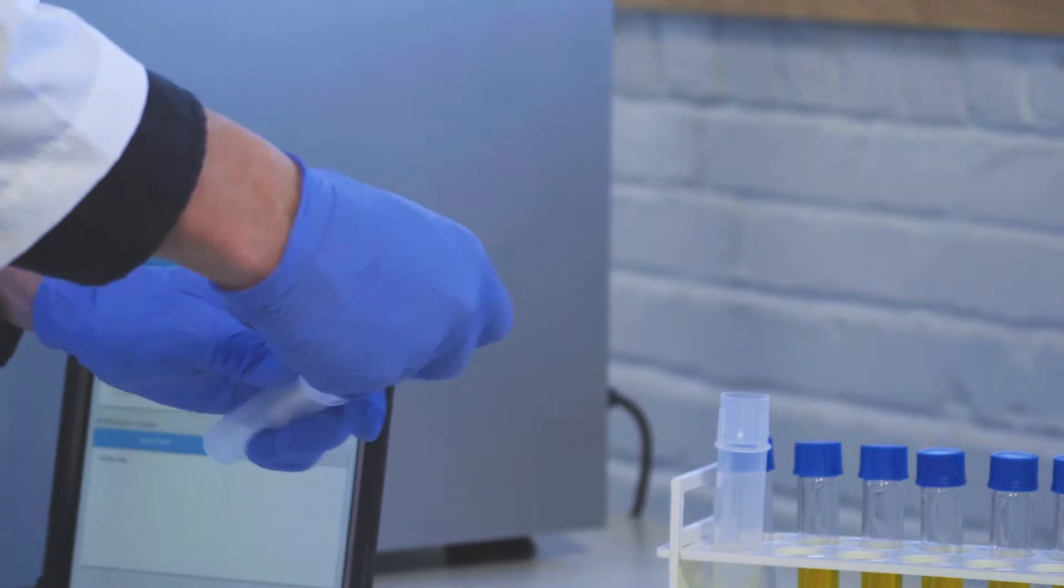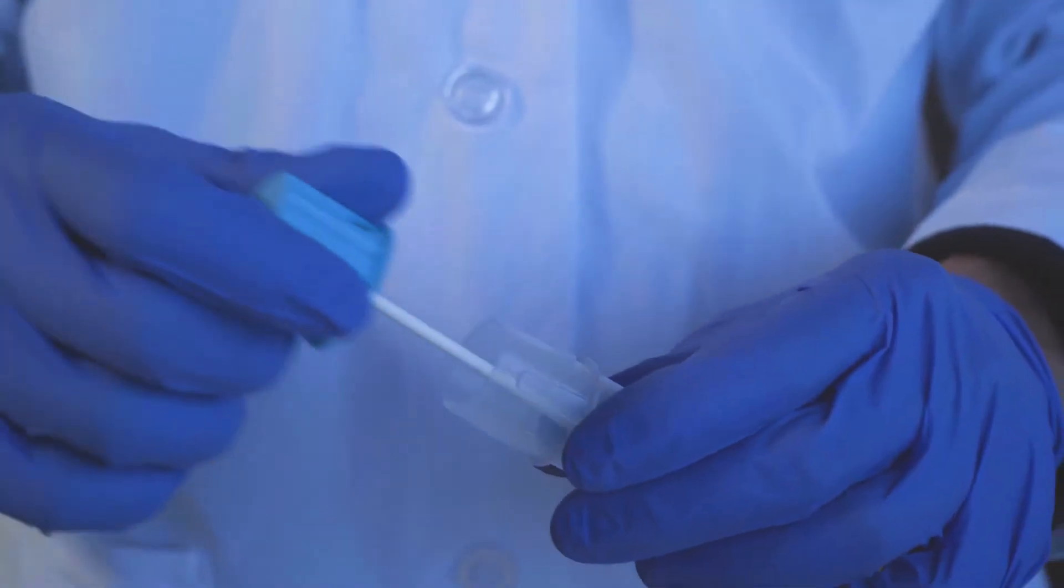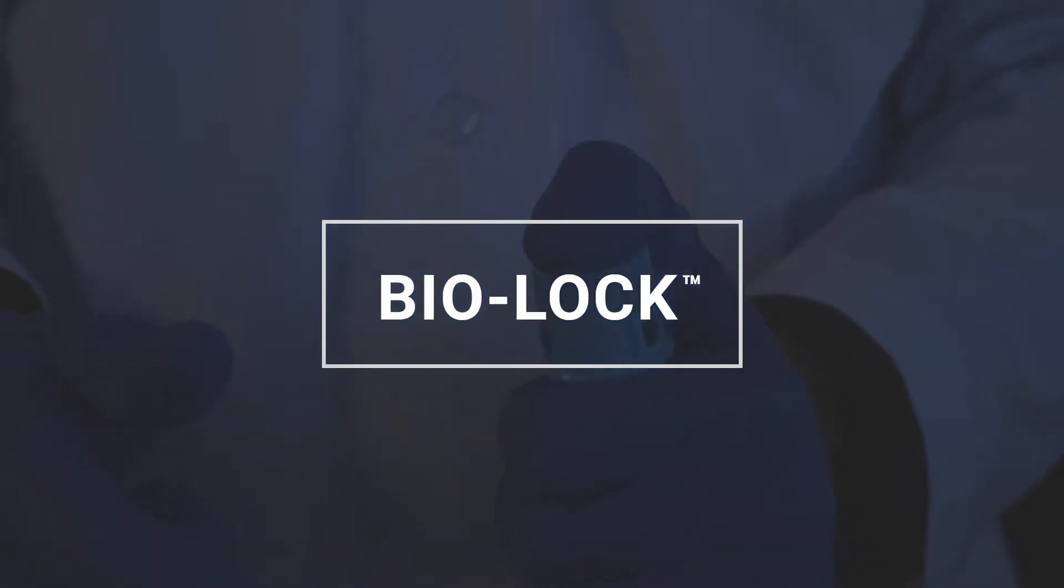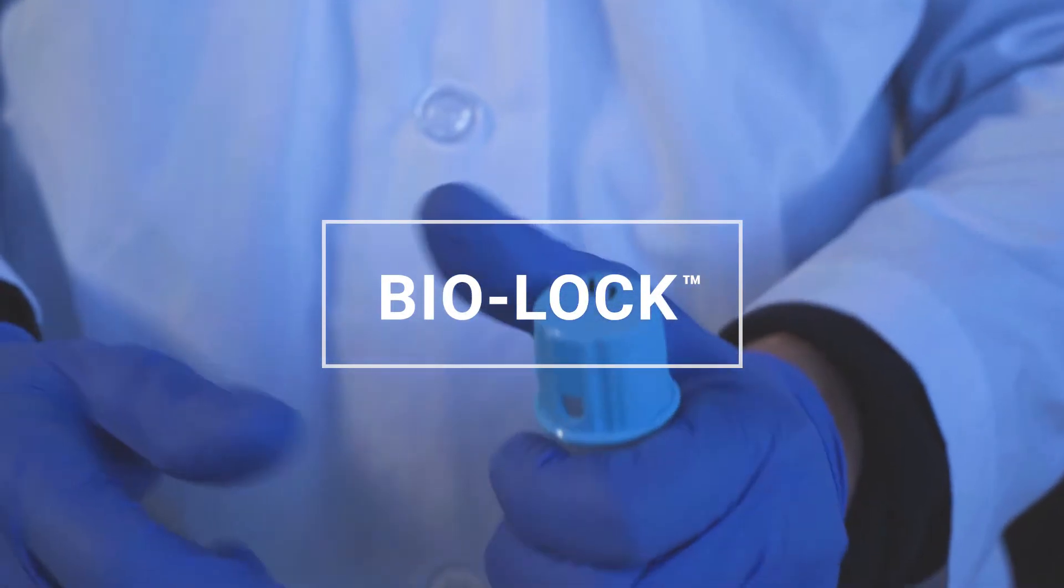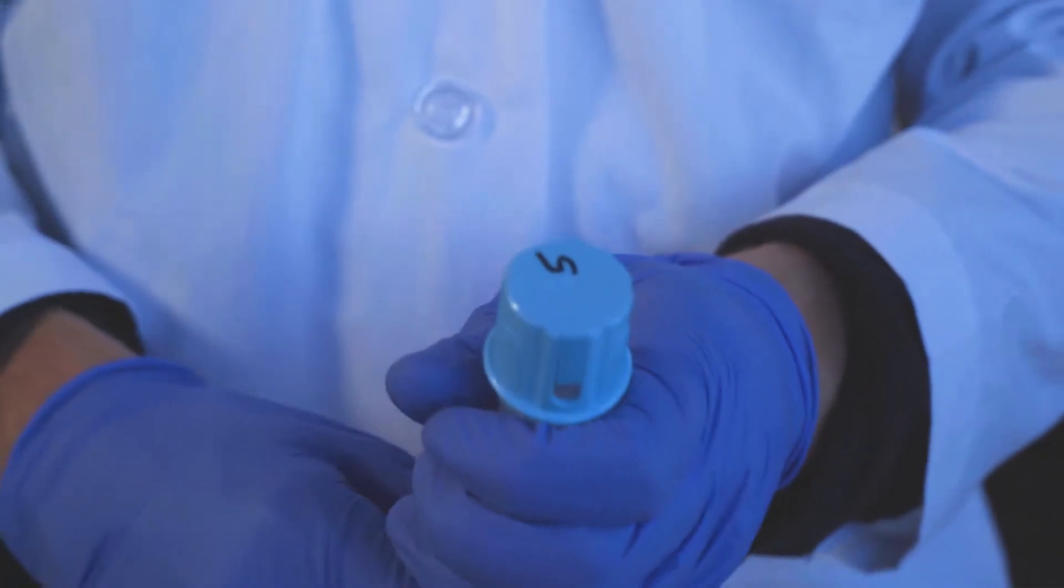Remove the sampling swab from the transport tube and place it into the detection tube with the media. Firmly press down the BioLock cap till you hear a click. The tube is now permanently sealed, leak-proof, and safe.